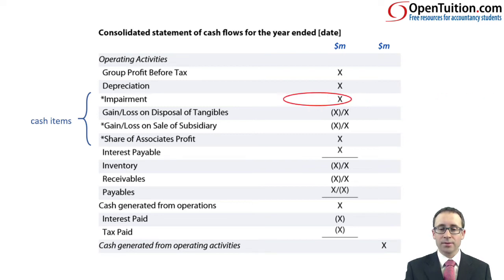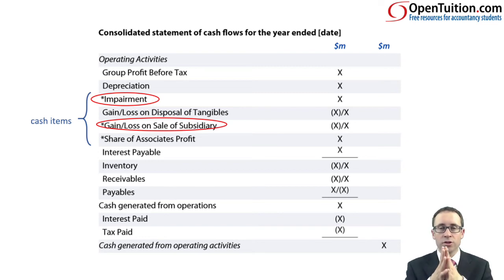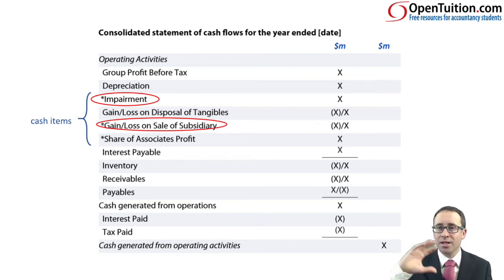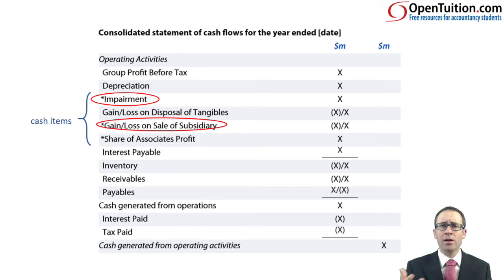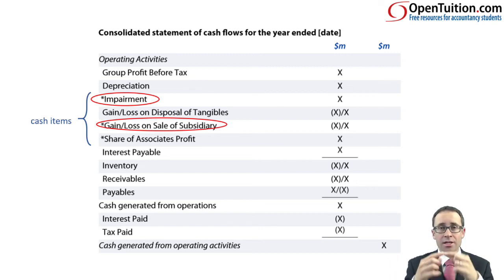Following impairment, there's the gain or loss on sale of a subsidiary. Just as in F7 we adjusted for the profit or loss on disposal of property, plant and equipment, here the same principles apply — we may have a gain or loss on disposal of the subsidiary. That group profit or loss is just an accounting adjustment for the substance of having disposed of a subsidiary. The cash element is dealt with as a cash inflow within investing activities, but you need to adjust for the gain or loss: if it's a gain, deduct it; if it's a loss, add it back.